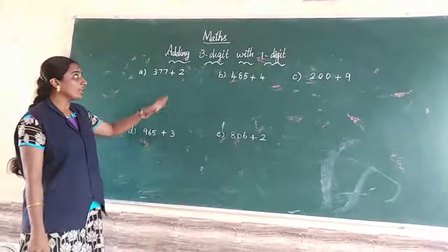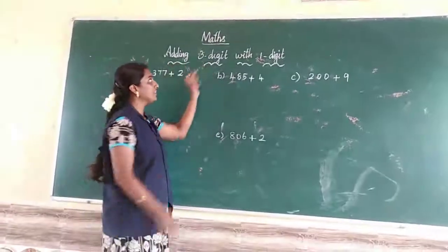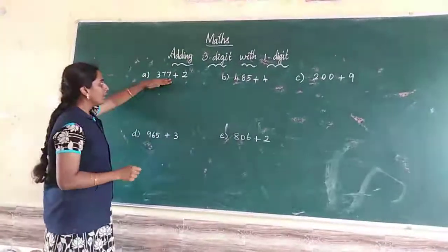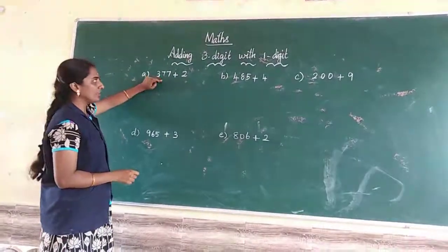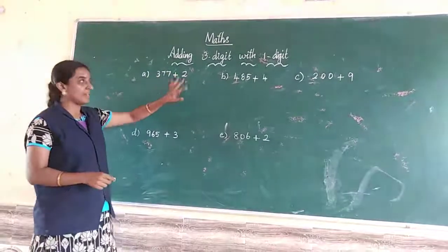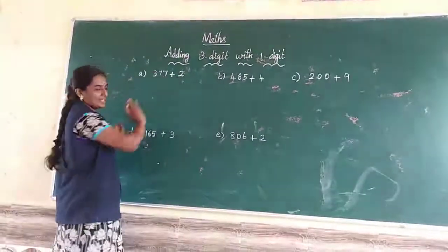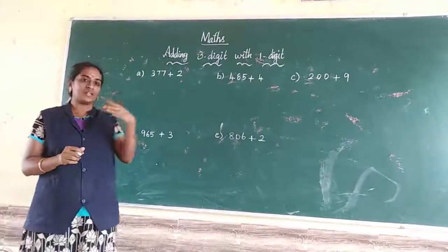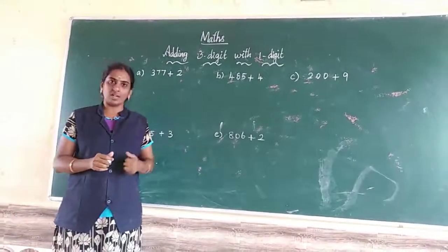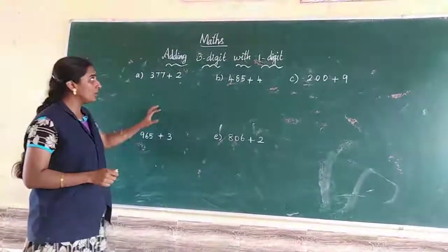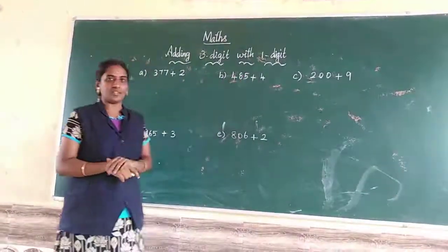Hi students, now we are going to learn adding 3 digits with 1 digit. You have 3 numbers, that is called 3 digits, and then you have only 1 number, 1 digit. That is called 3 digits with 1 digit sum. Already we have done 1 digit sum, 2 digit and 1 digit sum, 3 and 1 digit sum, and then 2 digit sum. Now we are going to learn 3 digits with 1 digit.